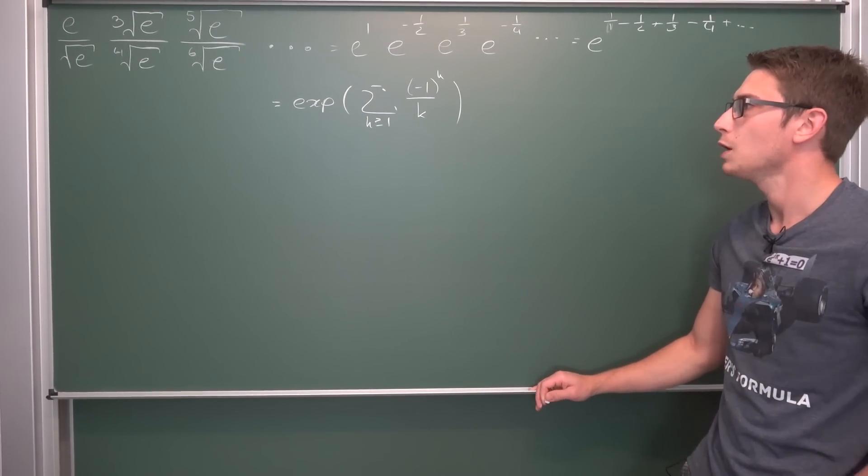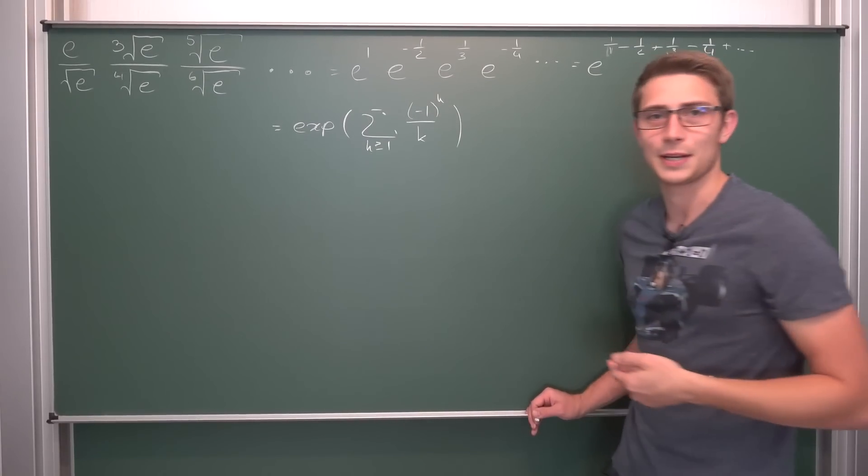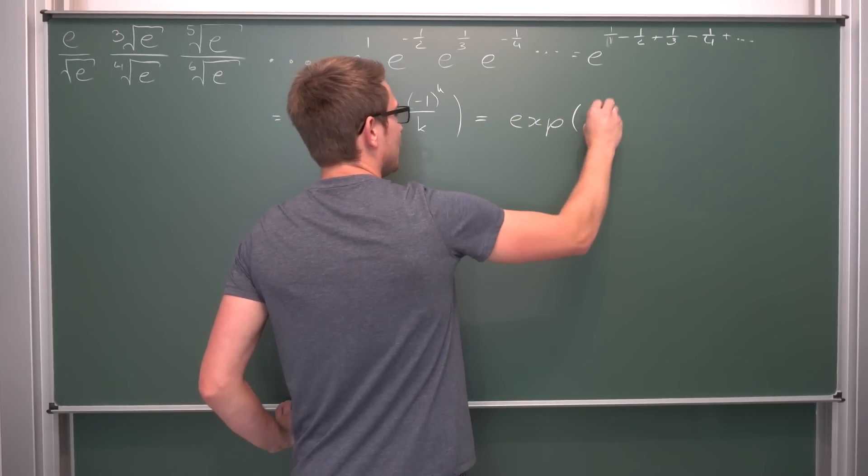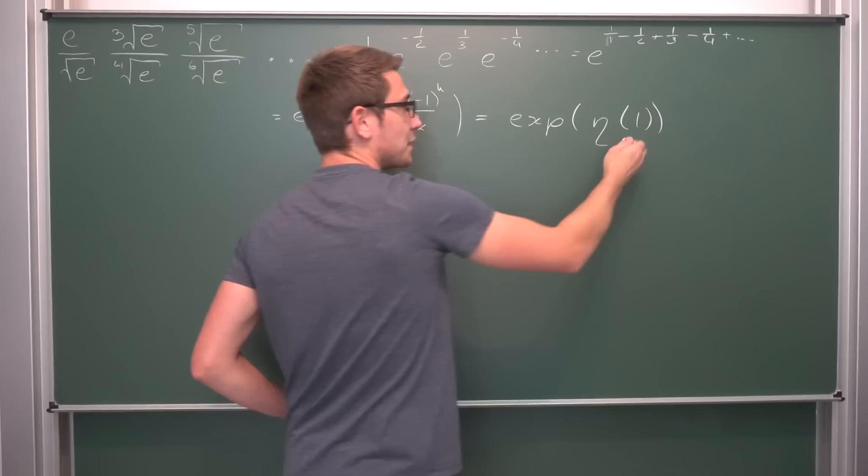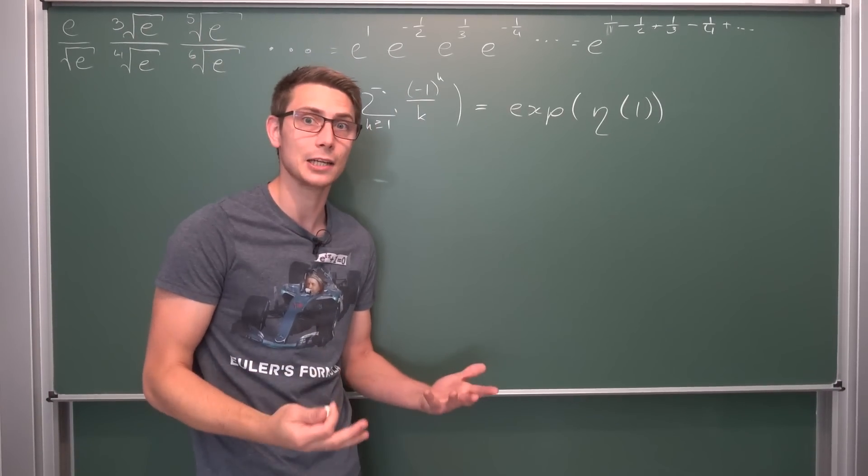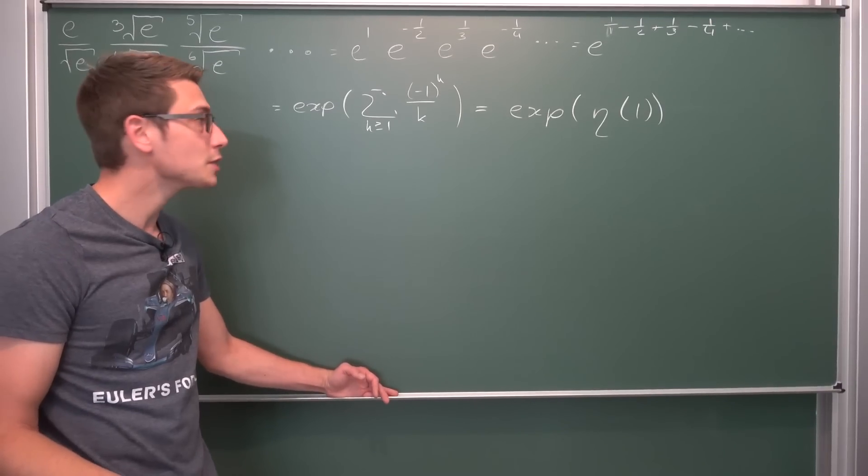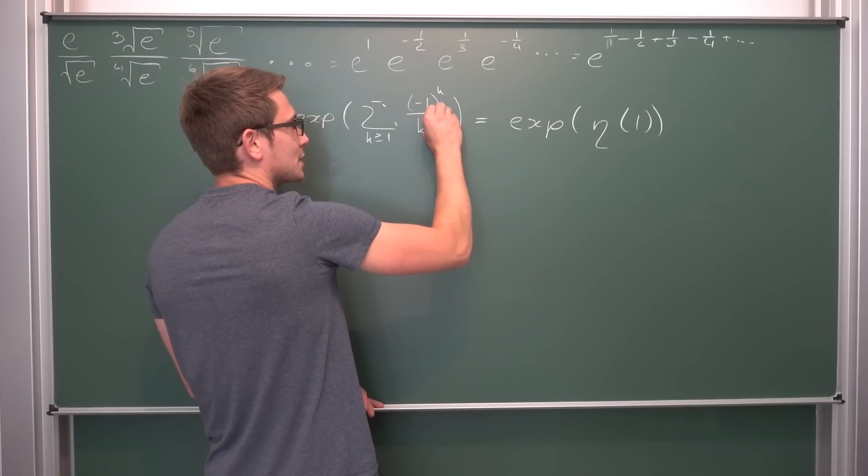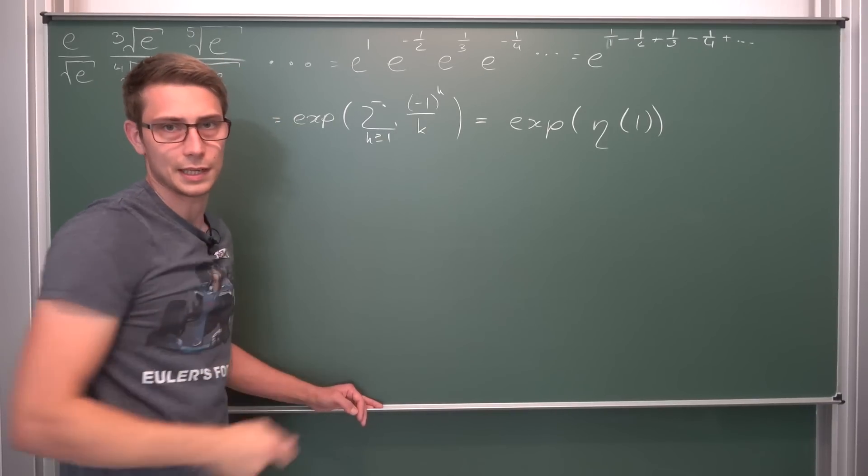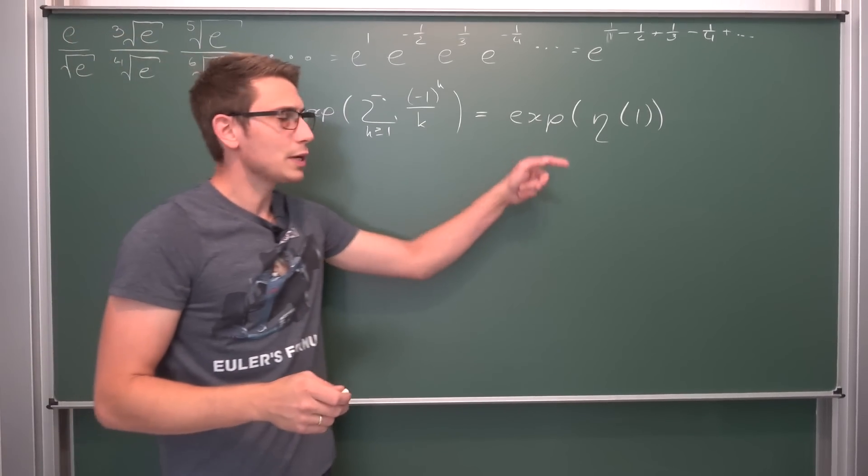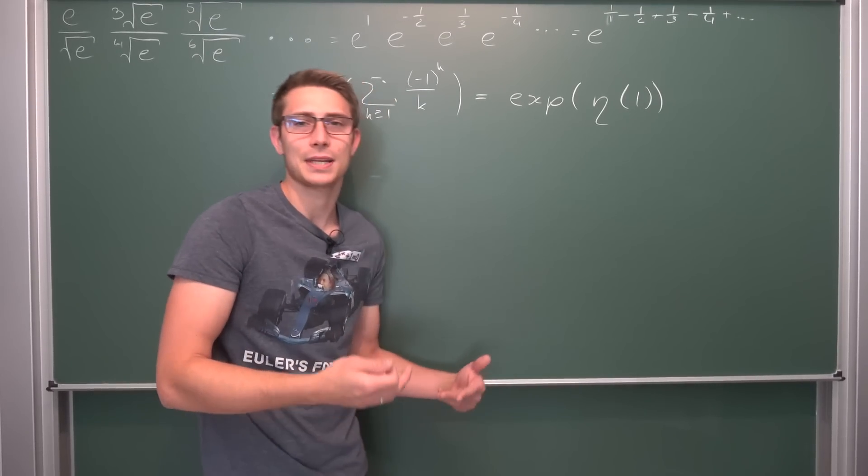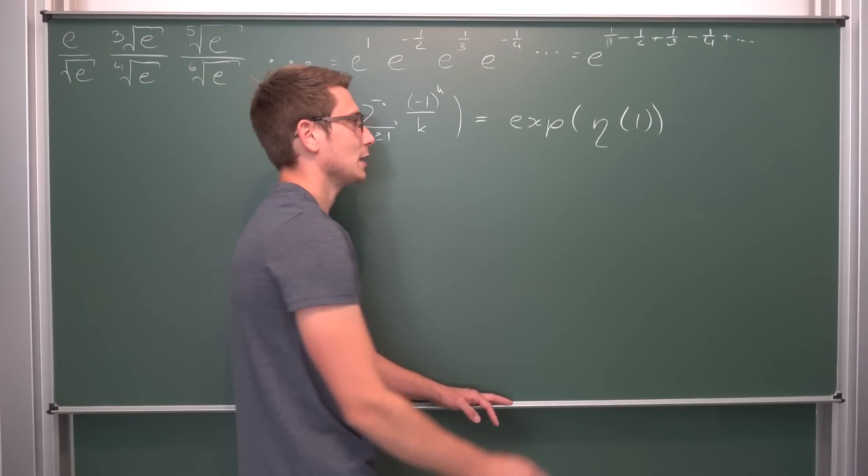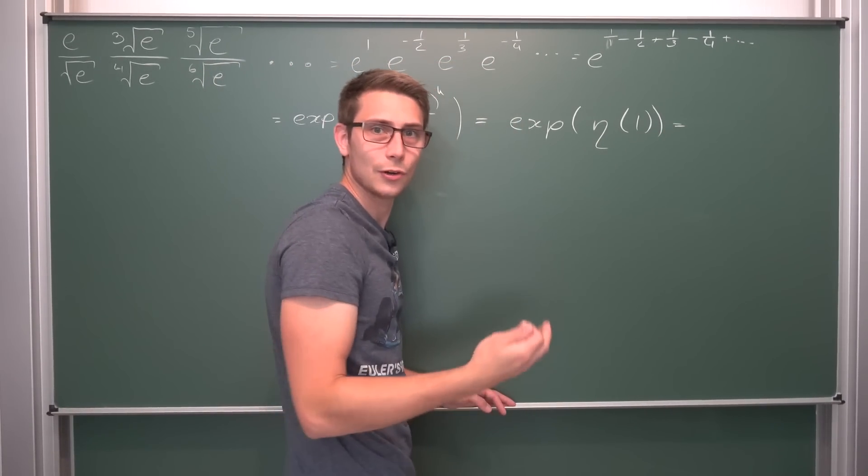If we rewrite one as one divided by one, everything becomes clearer in this alternating series. We have an index k running from one to infinity, something over k, but also an alternating series, so negative one to the k power. If you've watched my videos from one to two years ago, you might remember this summation. This is nothing other than the Dirichlet Eta function evaluated at one.